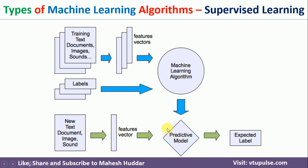Once the predictive model is available, you can give it new data — but in this case, you should not give the labels. The predictive model takes the new data and gives you a result. Whatever result you get, you can compare it with what you are expecting. If the model has classified the examples correctly, it means it has learned. If it classifies more examples correctly, it has learned well; otherwise, it has not.